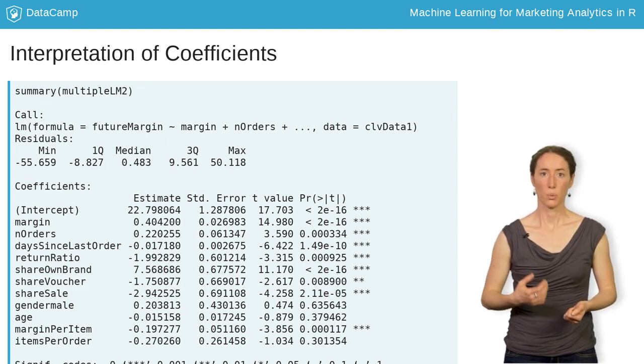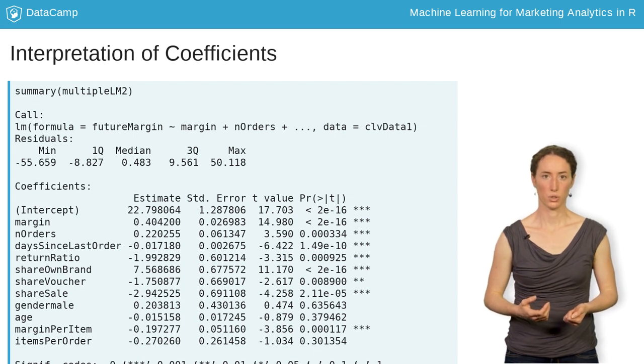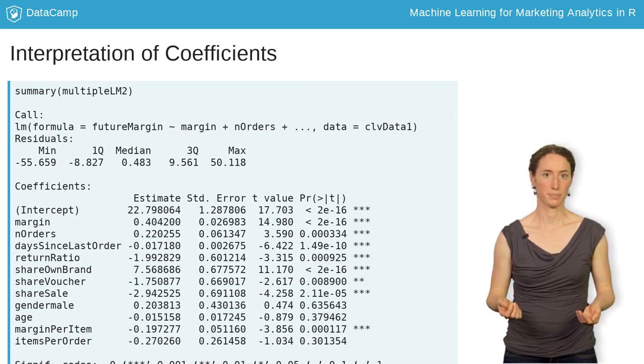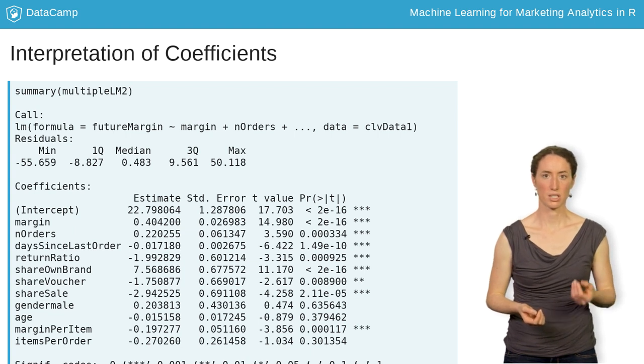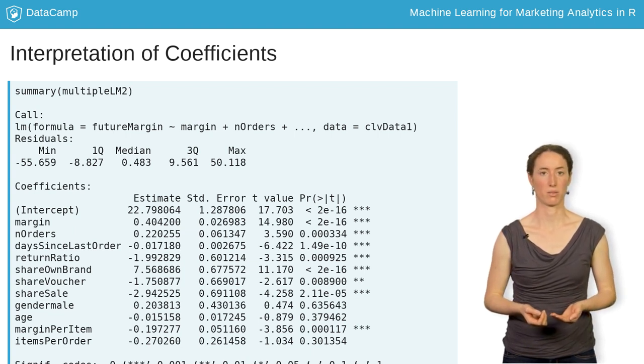Hence, we observe an expected margin in year 2 of roughly 23, given that every explanatory variable equals 0. It is usually hard to make interpretations for just the value of the intercept in a multivariate regression model.